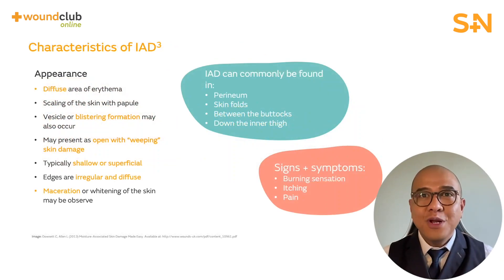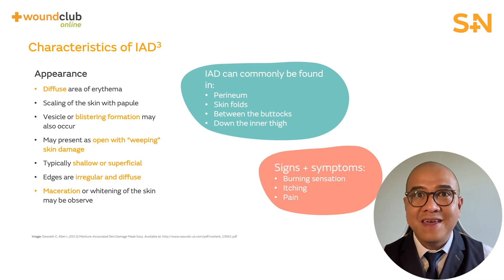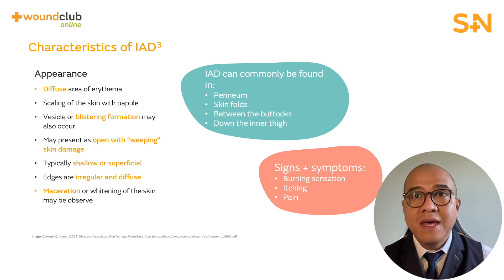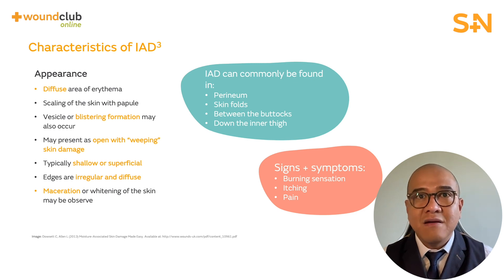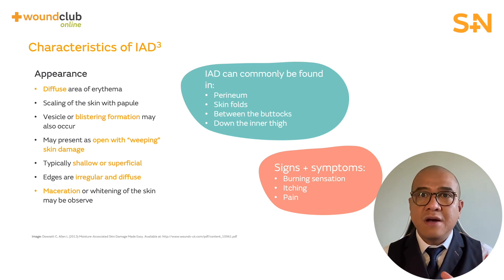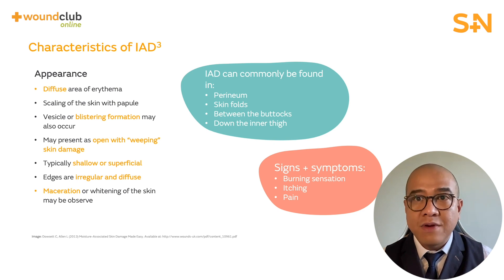Looking at specific characteristics of IAD: it normally appears as a diffuse area of erythema, scaling of the skin, and blister formation may also occur. It may present as open, weeping skin damage. These ulcers are typically shallow or superficial, with irregular and diffuse edges, and you may also observe maceration or whitening of the skin.